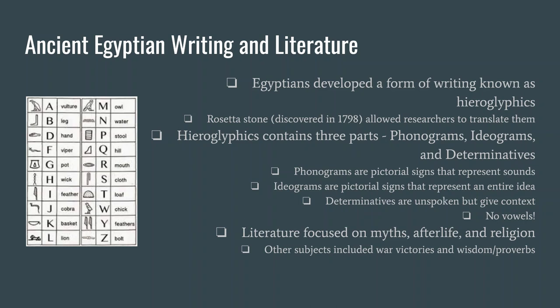Once they had this written language, the Egyptians started writing books, and they have a rich literature. Their works often deal with their myths and their afterlife. They have hymns to their various gods, stories of their war victories, books on wisdom and proverbs, and the aforementioned Book of the Dead. They did a lot of writing once they were able to produce a written language.